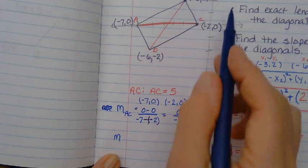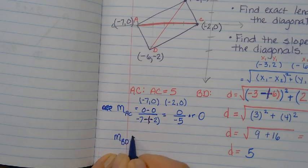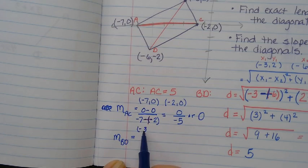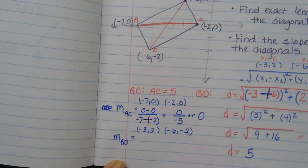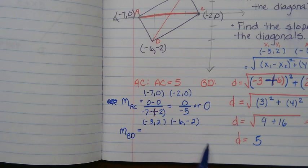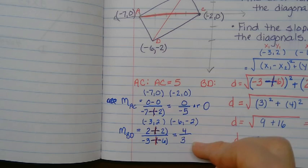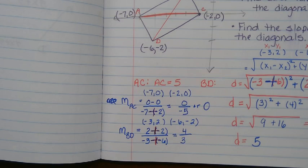Then we have to find the slope of the other diagonal, BD. So we're using the points negative 3, 2 and negative 6, negative 2. So why don't you go ahead and take a few minutes and find the slope of BD. When you get that, can you put it in the chat? So we have a slope of 0 and a slope of 4 thirds. Are those the opposite reciprocals of each other?